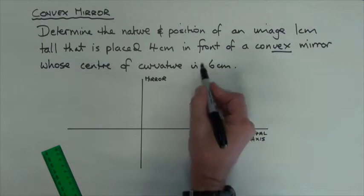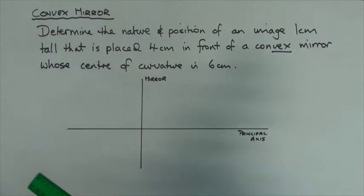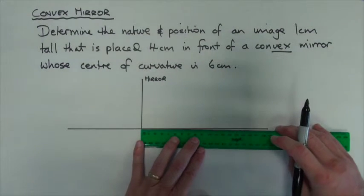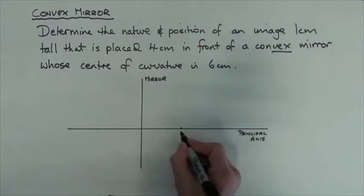So let's put the information on. Well, we know that it's got a center of curvature of six centimeters. So remember, it curves outwards, so the center of curvature is going to be on the right-hand side instead of the left, which we have with the concave.